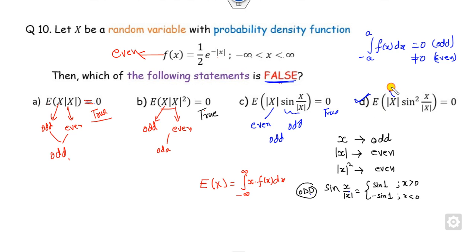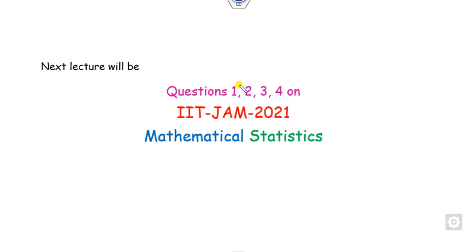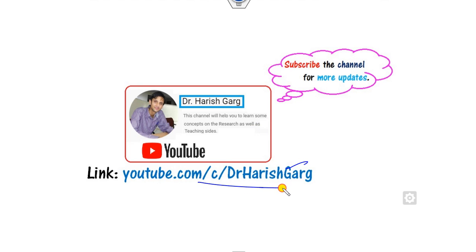The right answer is the remaining option: |x|·sin²(x). Since sin²(x) is a square, it is always an even function. And |x| is also even, so their product is an even function. Therefore the expected value will never be 0 — this is the false statement, and hence the correct answer to select. This is the way you can solve these three questions. In our next class we will see questions 1, 2, 3, and 4 for Mathematical Statistics. Till then follow the link for related videos. Best of luck students — happy learning.